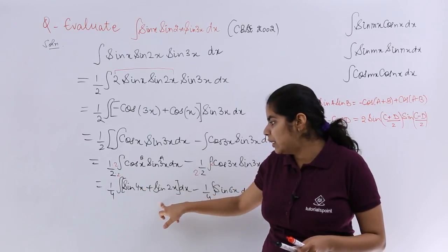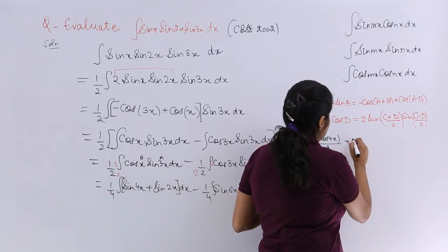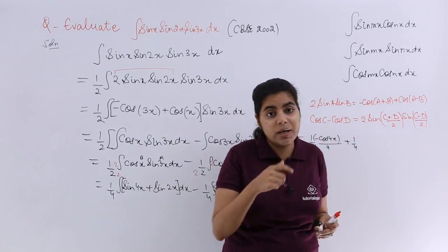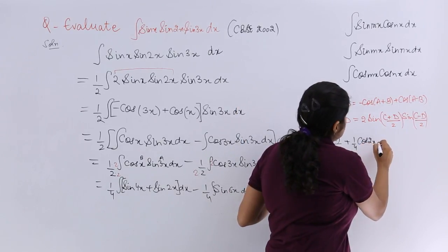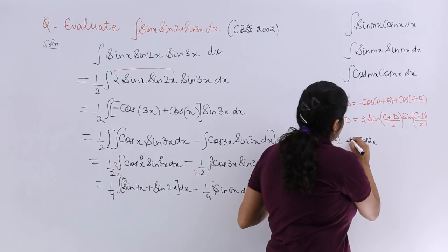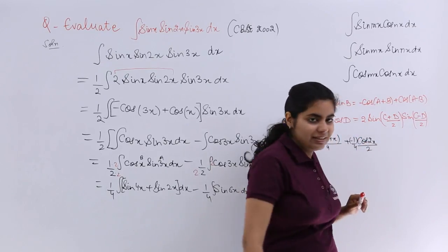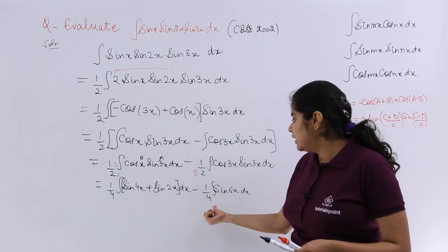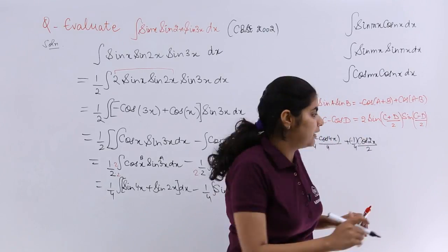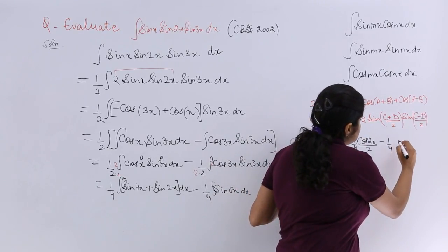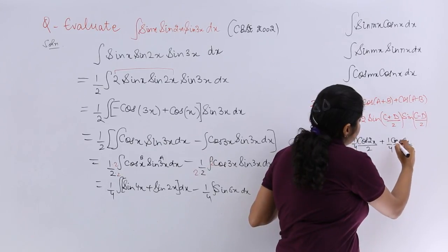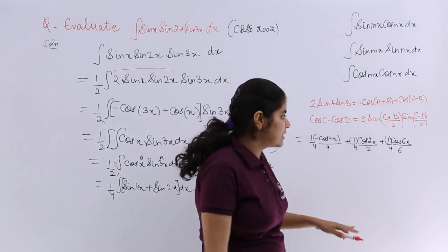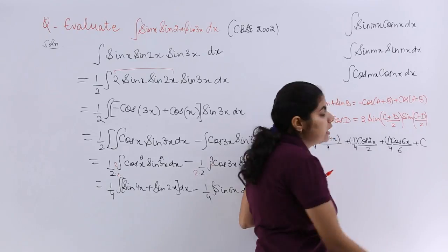Then plus 1 by 4 again, sin 2x is there. Sin 2x integration is cos 2x in negative and divided by 2 again. Last but not the least, minus 1 by 4. Sin 6x integration is minus cos 6x divided by 6.